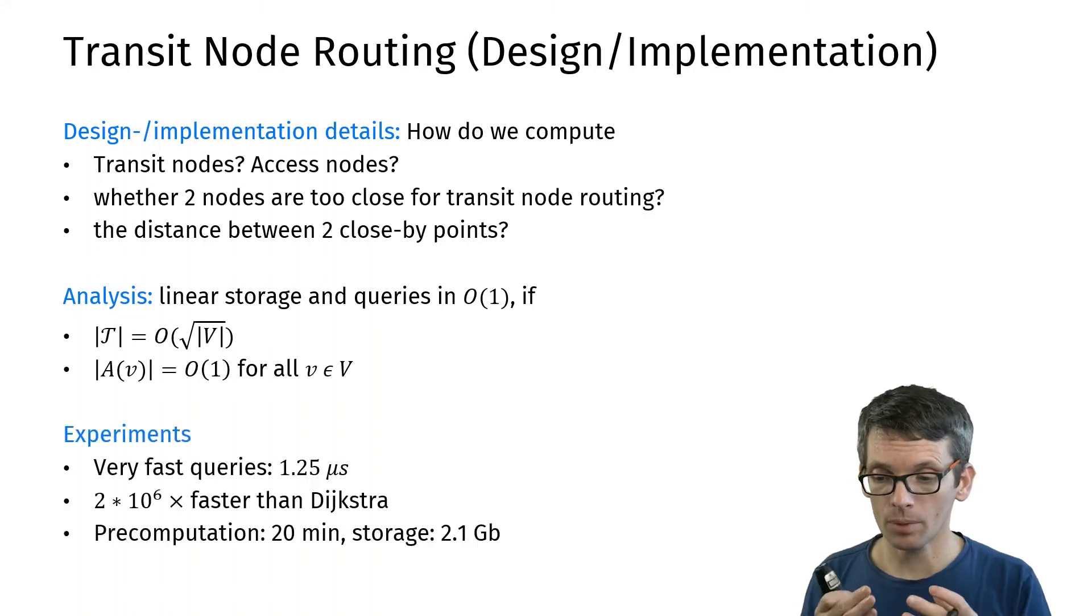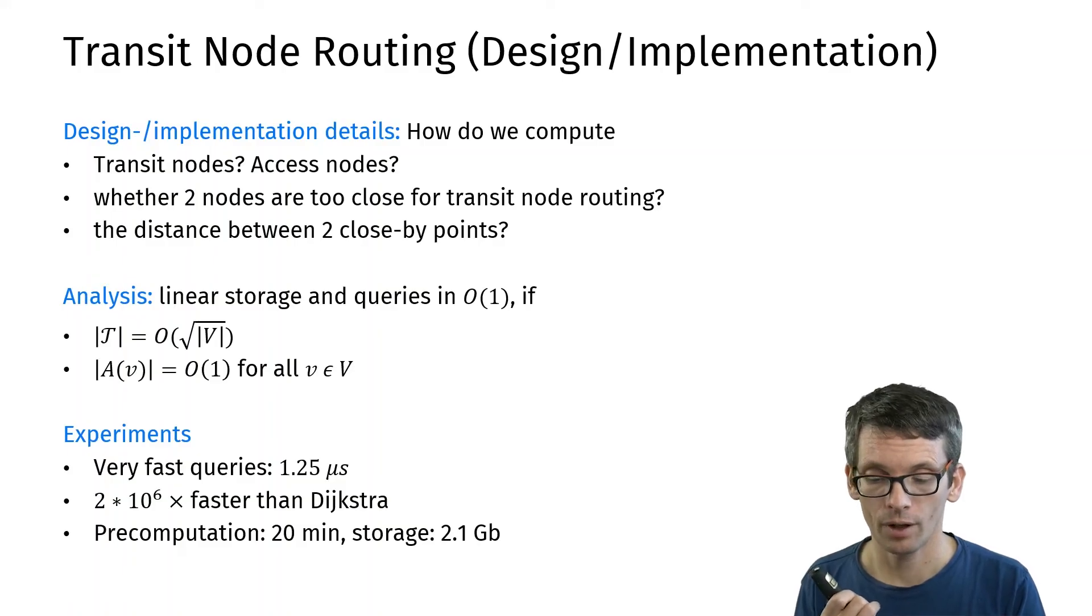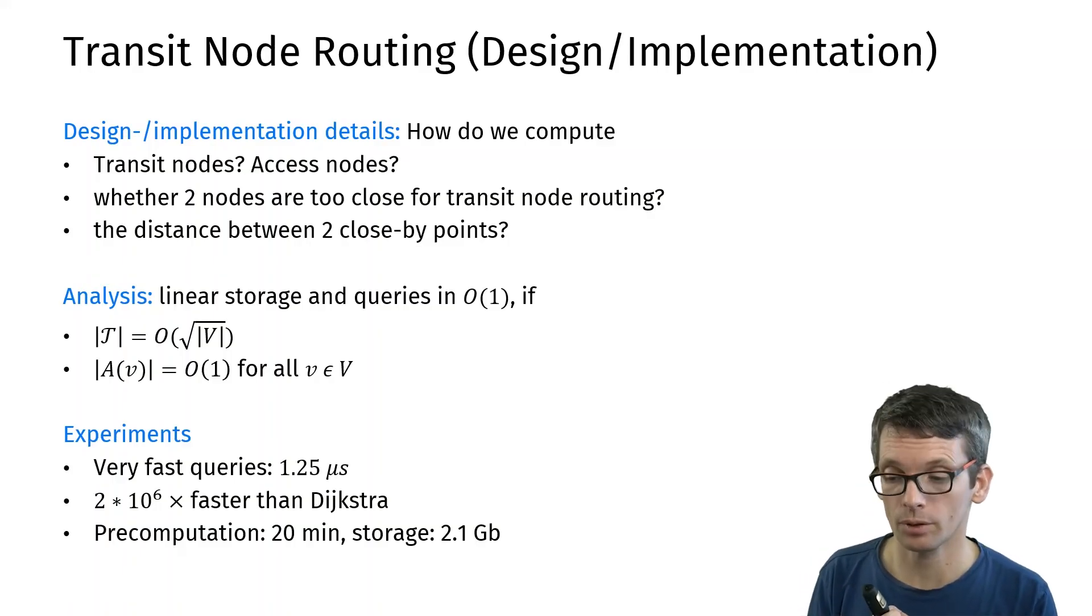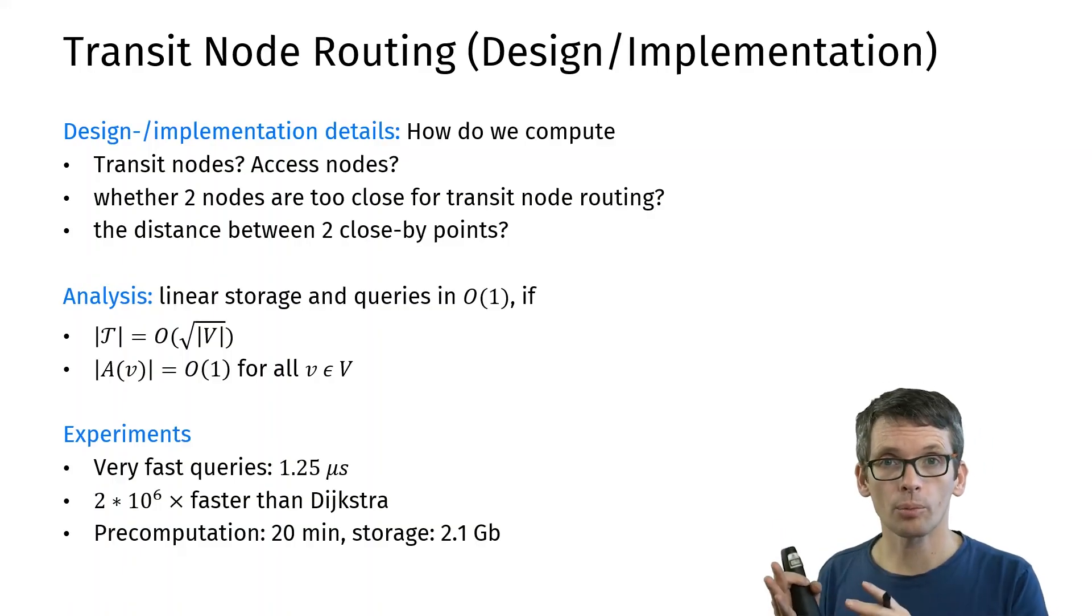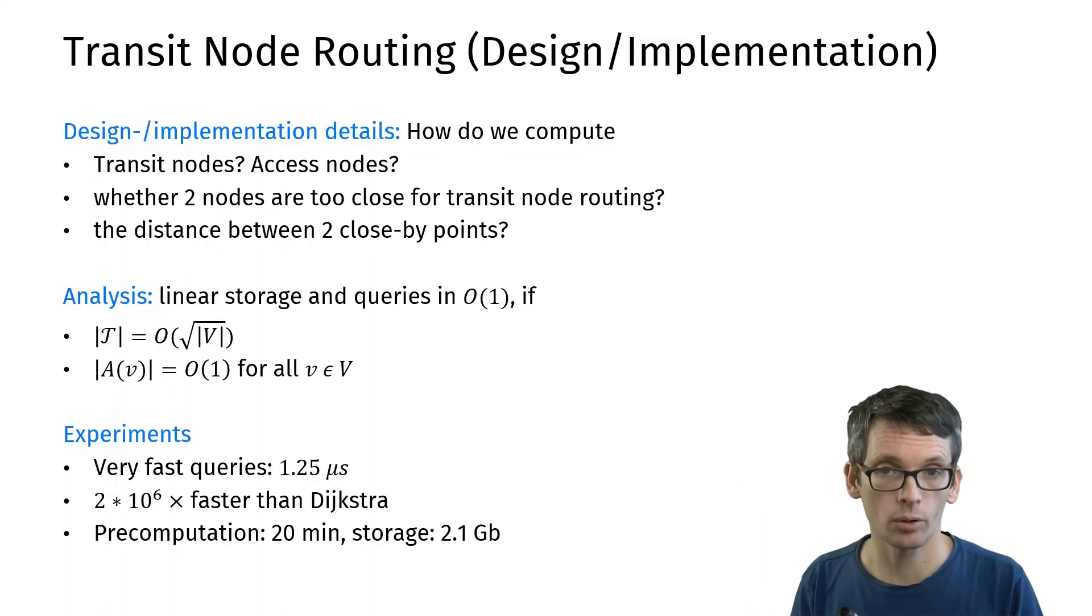In terms of experiments or its practical performance, transit node routing is very fast. We need 1.25 microseconds per query. And that is 2 million times faster than Dijkstra's algorithm. In terms of pre-computation, it only takes 20 minutes. Storage, I actually in my quiz overestimated. We can do with around 2 gigabytes. So that is a very impressive performance.